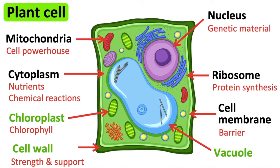Plant cells also have a permanent vacuole. This is filled with fluid or cell sap. The vacuole provides structure for the cell and the plant. The vacuole also stores sugars.